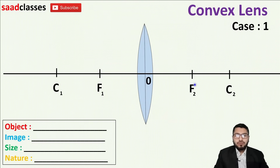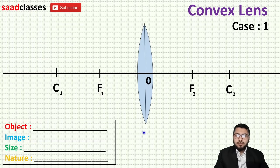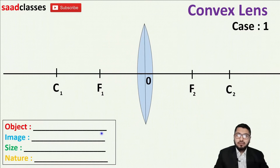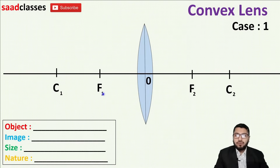And I have focus two — the second focus — and the second center of curvature for the other curved path. That's the only difference while constructing a lens versus a mirror. The distance between O and F and between F and C are equal.